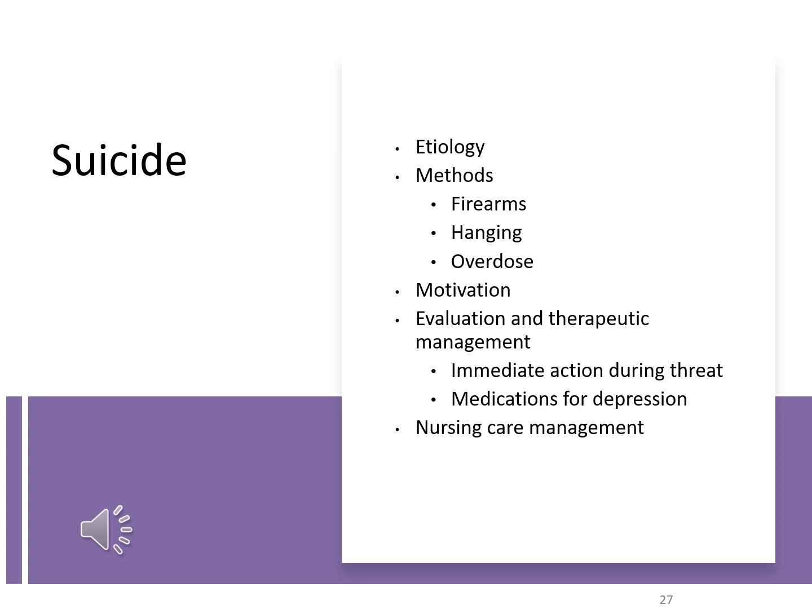Suicide is another big concern, especially with adolescents, simply due to the fact that their brains are still developing, so they can be very impulsive. The methods primarily used are firearms, hanging, and overdosing. It's important to understand the difference in terms: suicidal ideation is just the thought about committing suicide, whereas a suicide attempt means the actual action was carried out. All adolescents should be assessed on their suicide risk and asked if they've ever had suicidal ideation, and if they have, it needs to be investigated further.